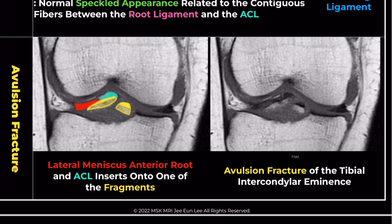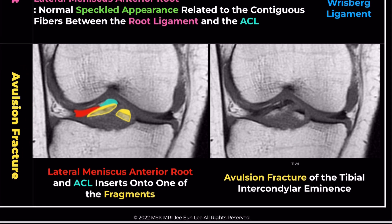Now let's examine a case involving tibial spine fractures, classified as type 4 under the Myers and McKeever system. On a coronal T1-weighted image, we observe a comminuted, displaced tibial eminence fracture typical of a type 4 injury.